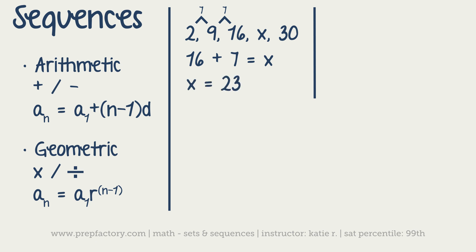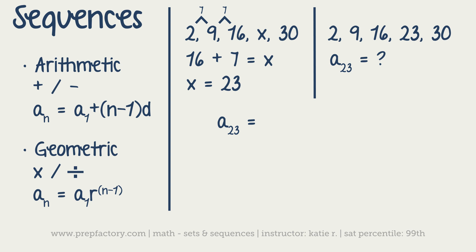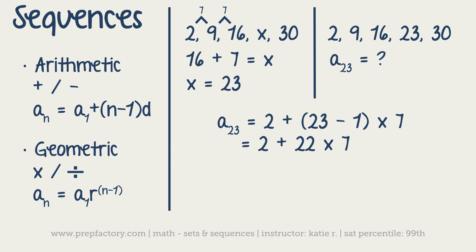Now if they give you the sequence 2, 9, 16, 23, 30, etc. and ask for the 23rd term, that's when you want to use the formula — otherwise you'd be adding 7 over and over and likely make an error. So the 23rd term equals a_1 + (n − 1) · d = 2 + (23 − 1) · 7 = 2 + 22 · 7 = 2 + 154 = 156.